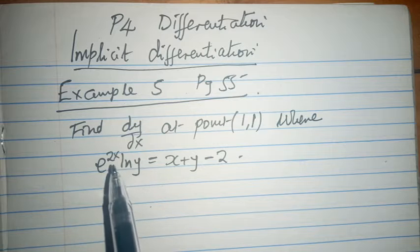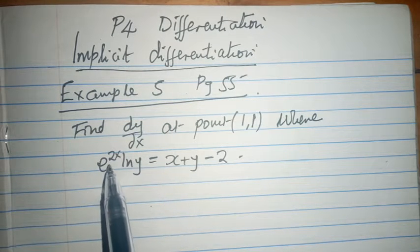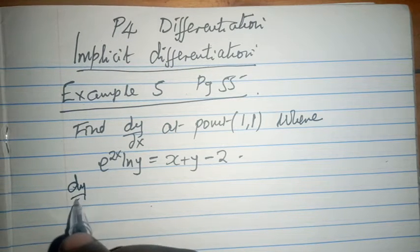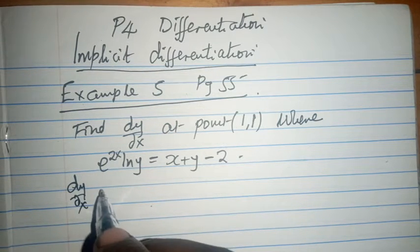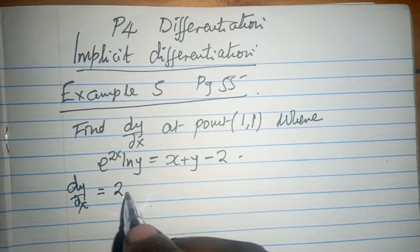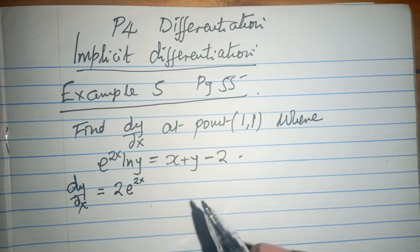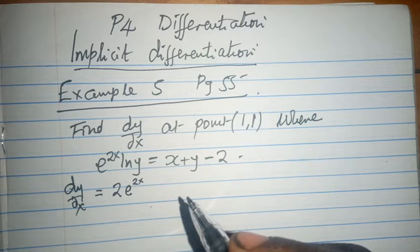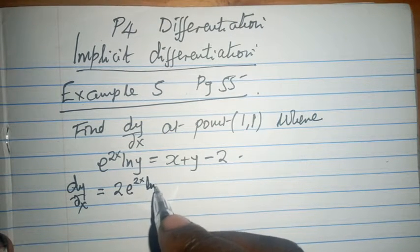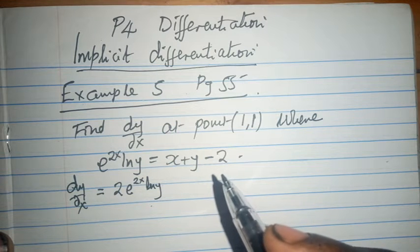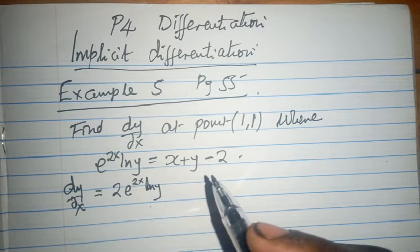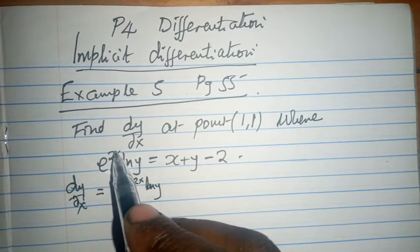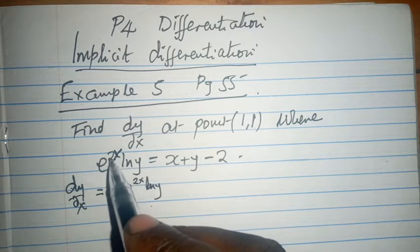We need to consider e raised to power 2x, the derivative of that. dy/dx is going to be 2 e raised to power 2x ln y because we have just differentiated with a sharp eye on the x.